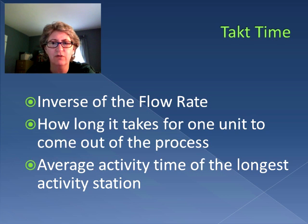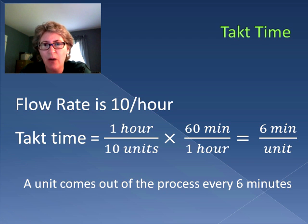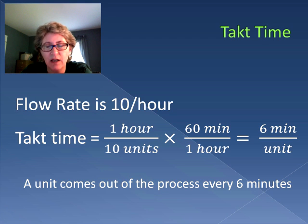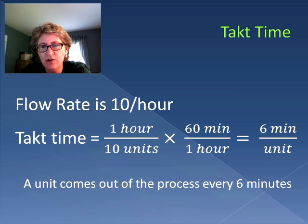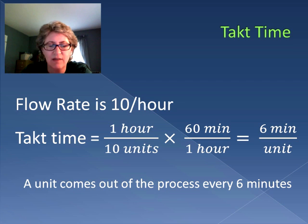Let's start with the inverse of the flow rate. If we're given a flow rate that says we have 10 units per hour going through a process, then the TACT time is the inverse of that — one hour per 10 units. If we convert that to minutes, a flow rate of 10 per hour is a TACT time of 6 minutes. A unit comes out of the process every 6 minutes.